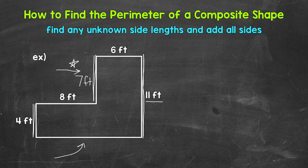Because again, we have 4 feet plus 7 feet giving us that 11 feet. Now we can figure out this missing side length — the horizontal side.